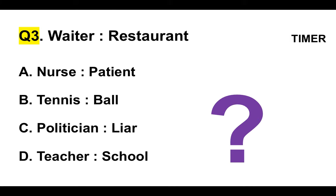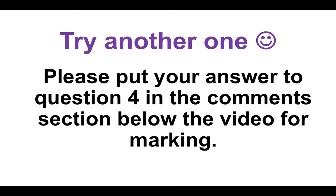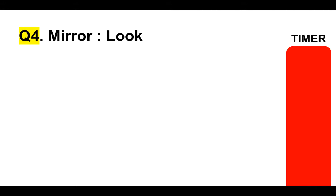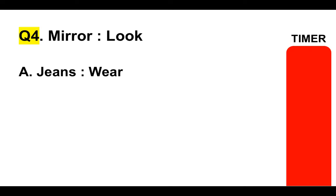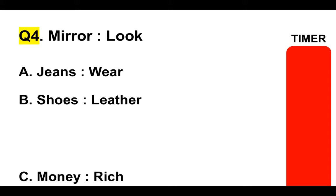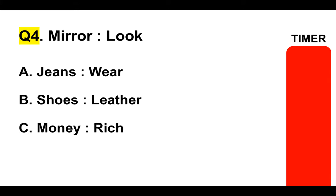Well done — hope you got that correct. Try another one. Please put your answer to question four in the comments section below. Question four — this is a bit harder. Mirror and look. Is it A, jeans and wear; B, shoes and leather; C, money and rich; or D, light and bright? It's a tough one — let's see if you get this right. Please put your answer to question four in the comments section below. Here's your timer.